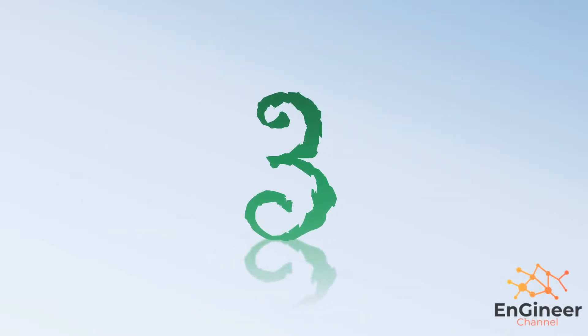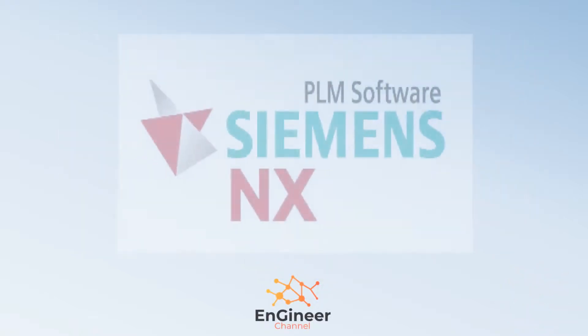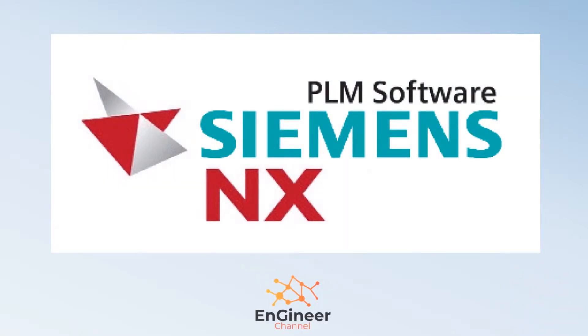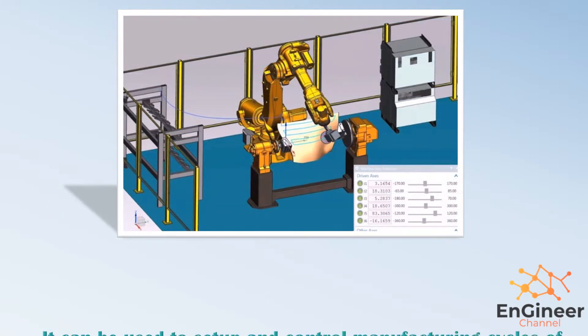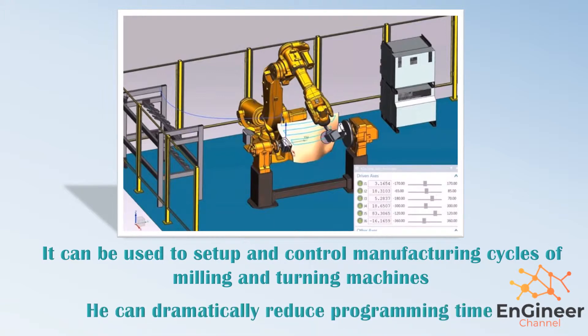Software number three is Siemens NX. It can be used to set up and control manufacturing cycles of milling and turning machines, and it can dramatically reduce programming time.